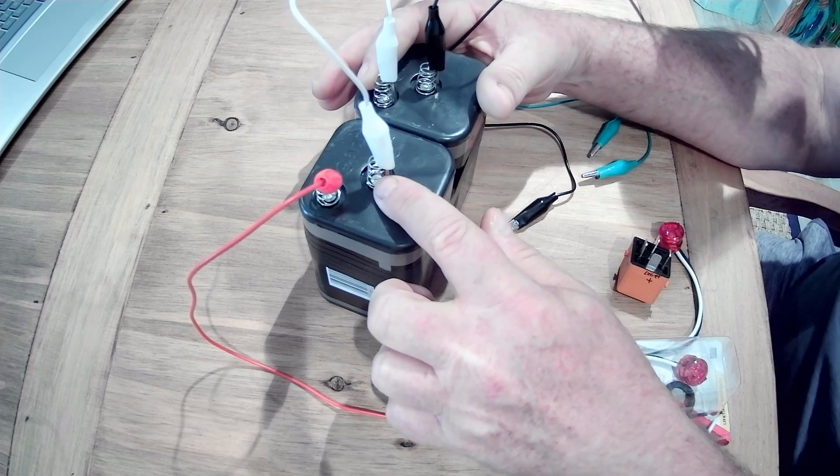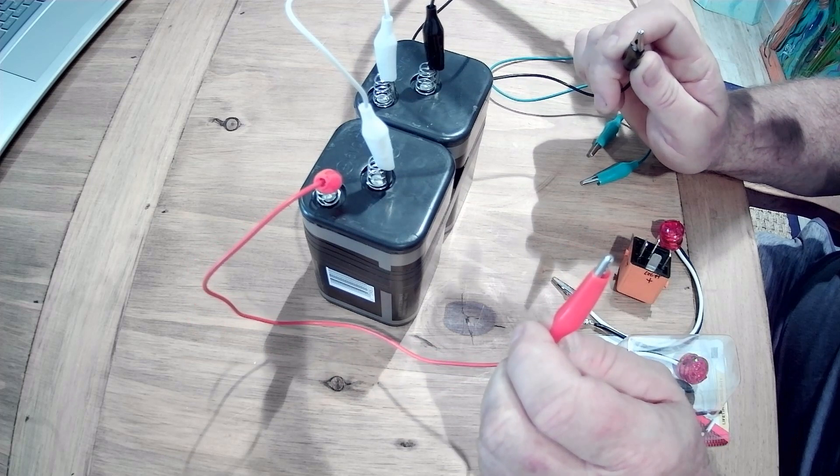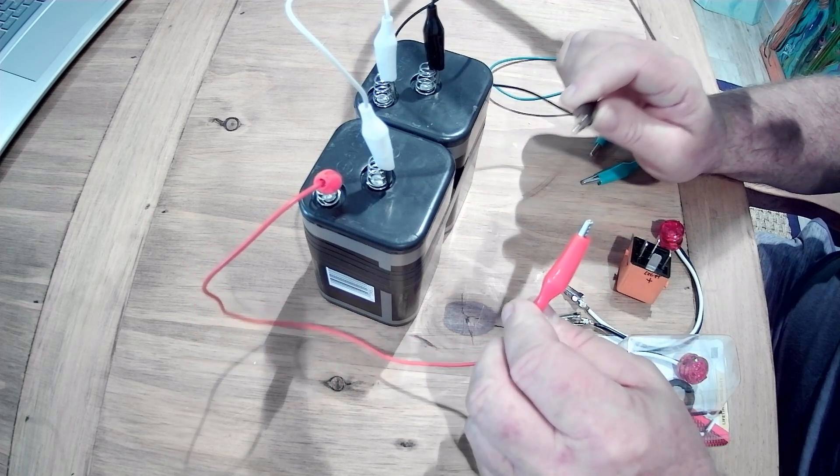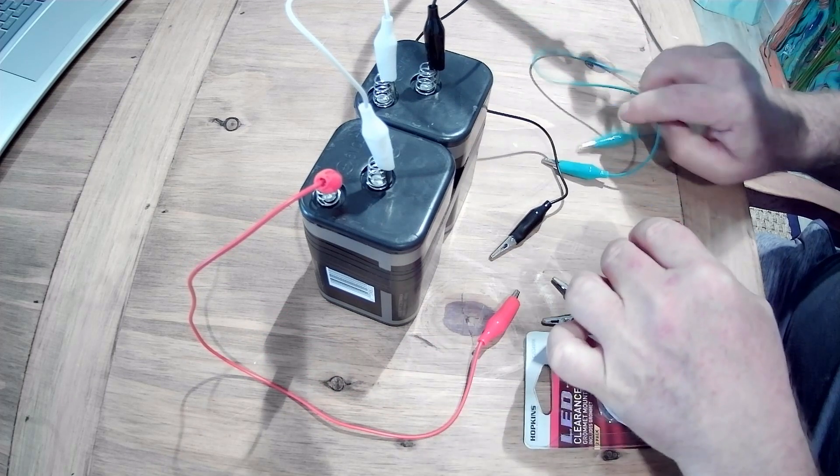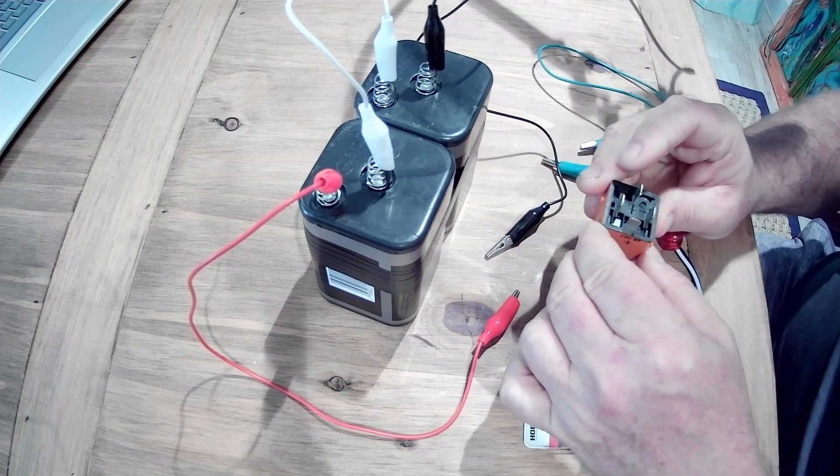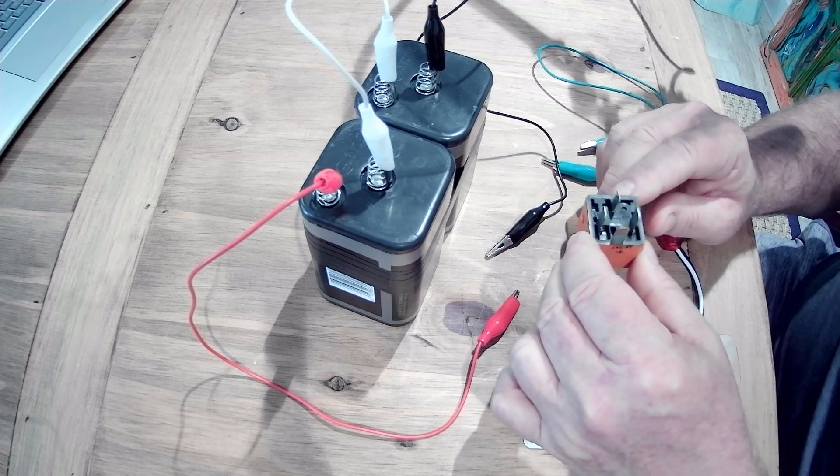And then we need two more leads to go from the positive and negative terminals to power up the relay. We need another lead that we're going to use on the relay itself to jump two of the positive terminals.